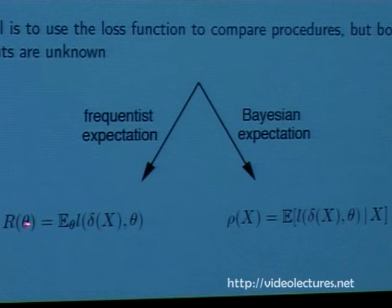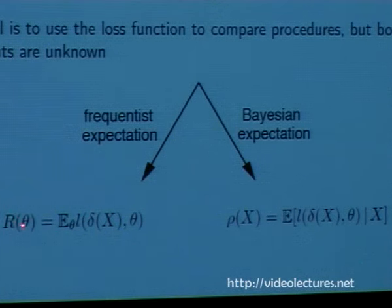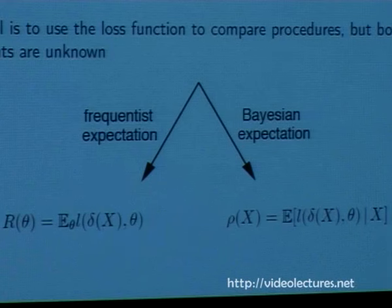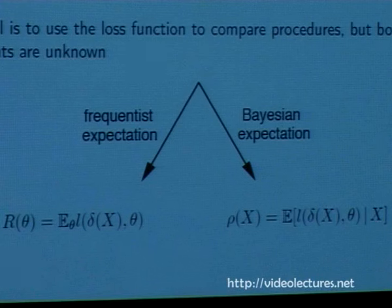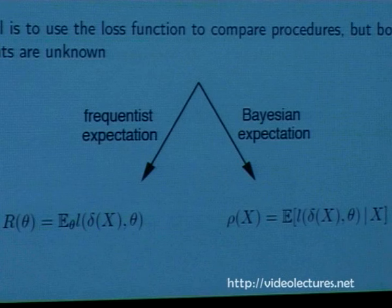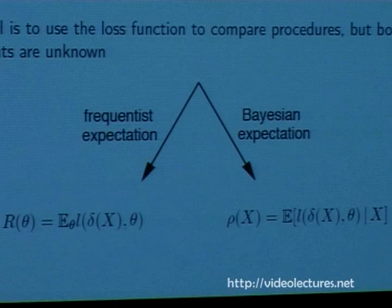So the frequentist has this function R(theta), and they say: I don't know what the truth is — it could be any theta — and now I need to convert this thing to a single number. There have been 50 years of work on ways to think about that. The one you've probably heard most about is minimax: take the maximum of the frequentist risk over all theta, then find the procedure with the minimum of the maximum risk. A lot of good work has come out of the minimax perspective.